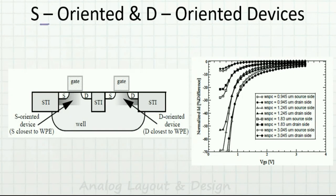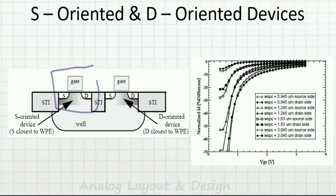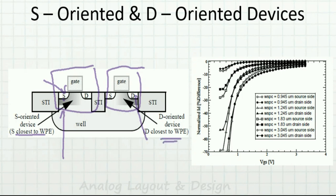There is a concept of source-oriented (S-oriented) and drain-oriented (D-oriented) devices. In this N-well, the corners and edges have different doping density, and devices close to the edge experience the well proximity effect. In one device, the source is closest to the well edge (S-oriented), while in another device the drain is experiencing the high well proximity effect (D-oriented). For both devices the threshold voltage will increase, but the percentage increase will be different for the source-oriented versus the drain-oriented device.